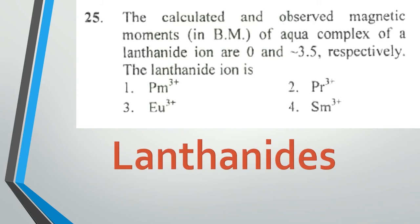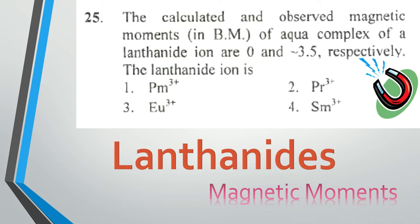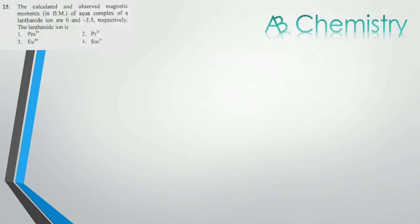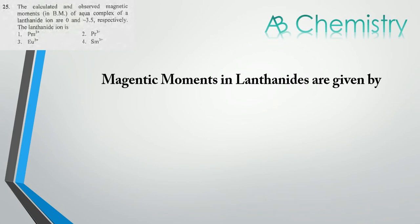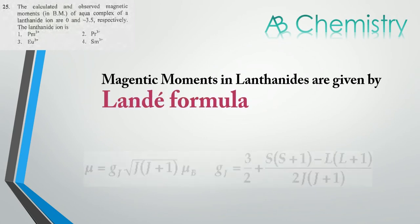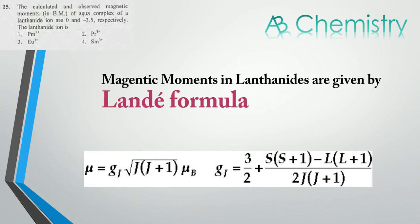In lanthanides, the magnetic moment is given by a formula called the Landé formula which is as follows: μ = g_J √(J(J+1)) μ_B, where g_J = 3/2 + [S(S+1) - L(L+1)] / [2J(J+1)].